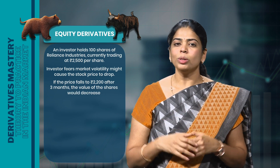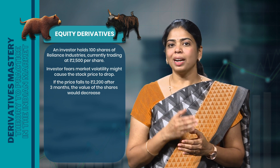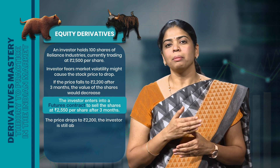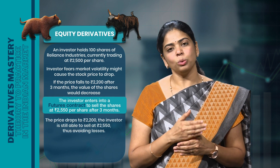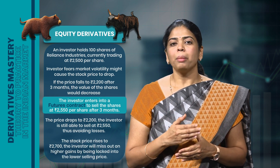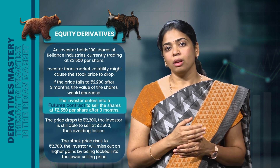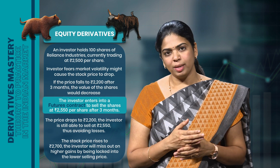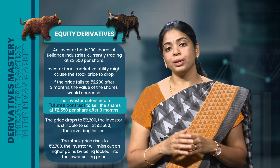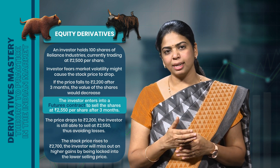If Reliance drops to Rs.2400 after 3 months, the investor will be able to sell the shares for Rs.2550. But if Reliance's share price rises to Rs.2700, he would miss out on some profits because he had locked in the selling price at Rs.2550. The investor might lose the extra profit, but he is still protected from the downside risk. There are other derivative instruments such as put options which allow individuals to limit their losses in case of price decline. We will explore the various types of options in detail in upcoming videos.